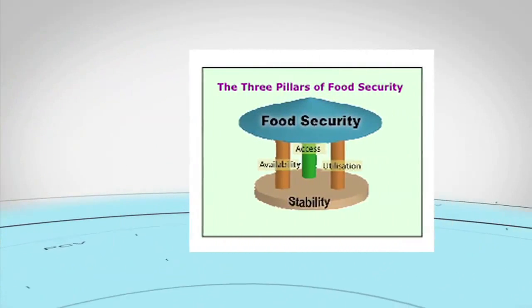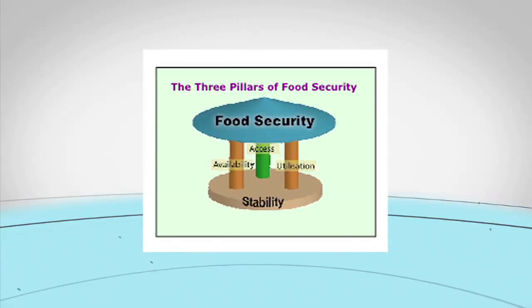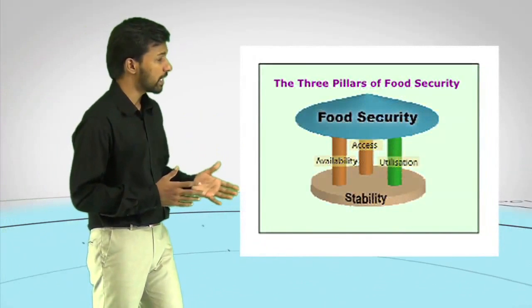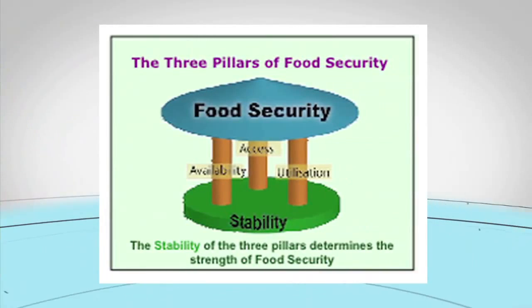Availability translates to food supply — whether the food is available in the regional, national, or international market. Access means physical and economic access: is the food available so that I can reach it, and do I have the purchasing power to buy it? The third pillar is utilization or use — how do you use that food. It's not just food; you need water to cook, you need proper sanitation. The use is actually for nutritious food for a healthy life. So all three pillars are very important.